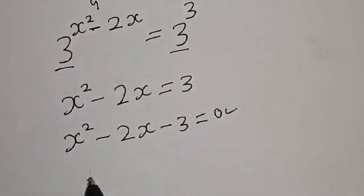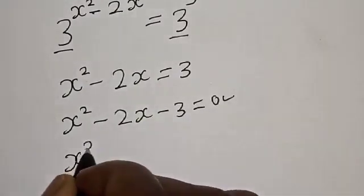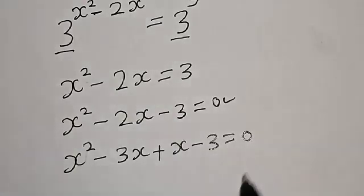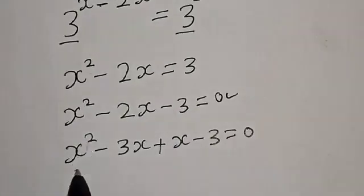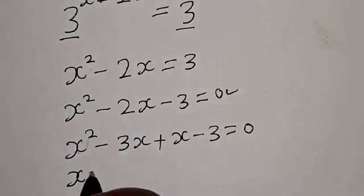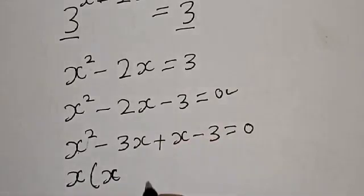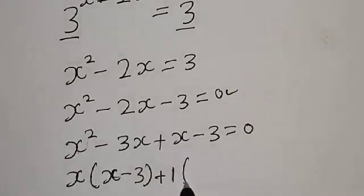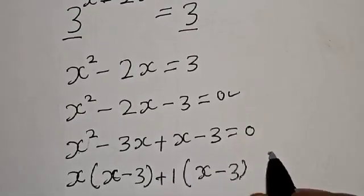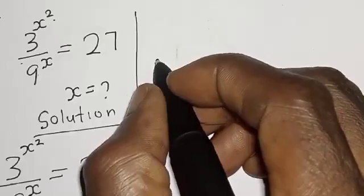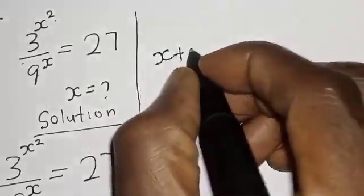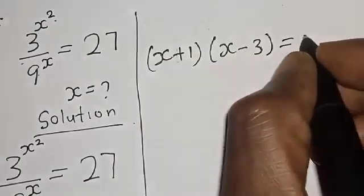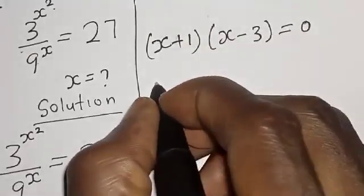Using the factorization method: s squared minus 3s plus s minus 3 equals 0. Factoring s out of the first two terms: s times (s minus 3), plus 1 times (s minus 3) equals 0. Therefore, (s plus 1) multiplied by (s minus 3) equals 0.